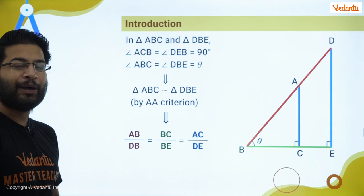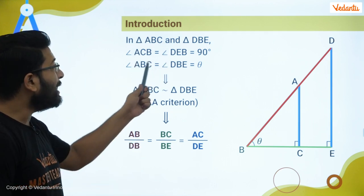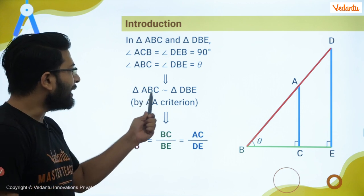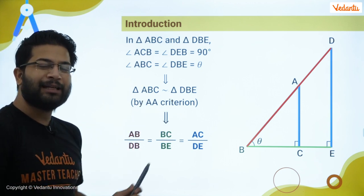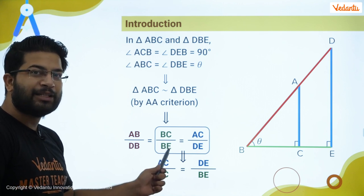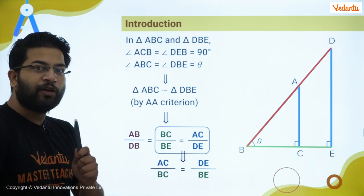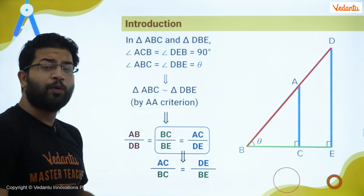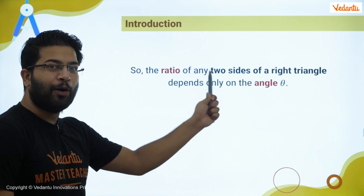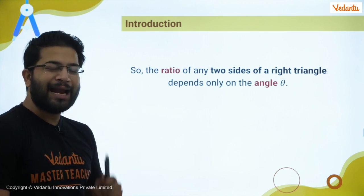In triangles ABC and DBE, one angle is equal because of the right angle, and one angle theta is equal. So by the AA criteria, both triangles are similar. When triangles are similar, the ratio of their corresponding sides will be equal. After rearrangement, AC upon BC equals DE upon BE. This means the ratio of any two sides of a right angle triangle depends only on the angle theta — theta is the parameter on which that ratio depends.